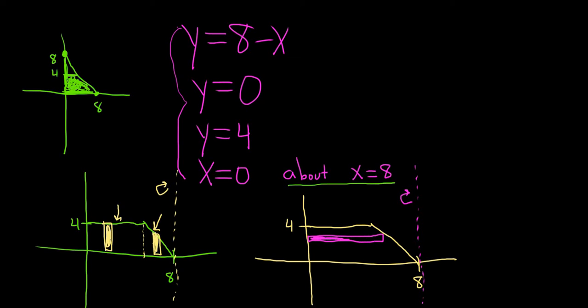So because we have a horizontal rectangle, that means we have functions of y. So we should probably take this here and solve it for x so that we have a function of y. To do that, we can add x to both sides. That will give us x plus y equals 8. So that means that x is equal to 8 minus y. So this is a function of y. That's what this function is right here. So this right here is x equals 8 minus y.